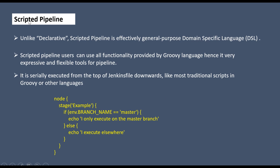If you compare the difference between the declarative pipeline and scripted pipeline, it is pretty easy. The declarative pipeline starts with 'pipeline' and open-close curly braces. But for the scripted pipeline, you use 'node' followed by open-close curly braces. That's how you can simply identify whether a script is written in declarative or scripted style.